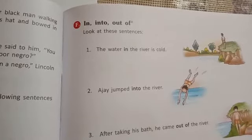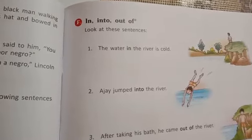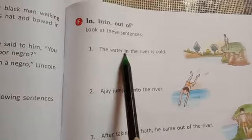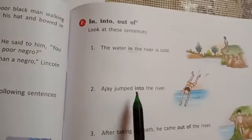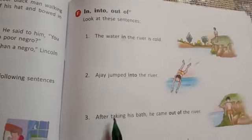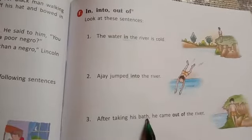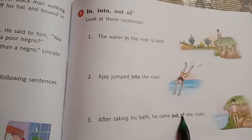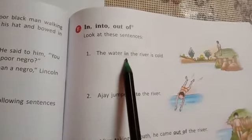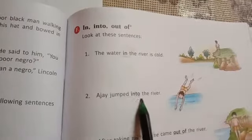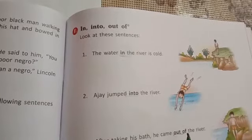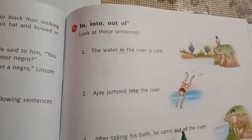First, look at these sentences. First: the water in the river is cold. Second: Ajay jumped into the river. Third: after taking his bath, he came out of the river. Now, the highlighted words — in, into, and out of — these are the prepositions.